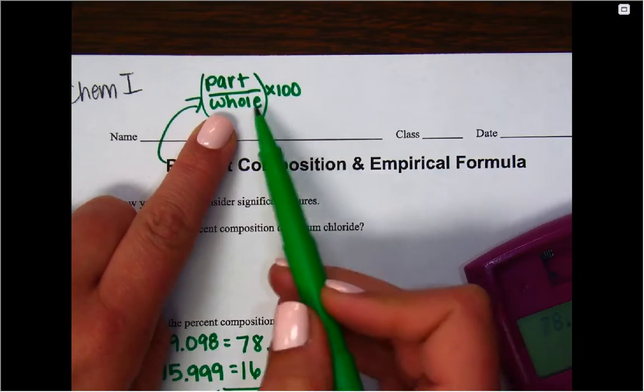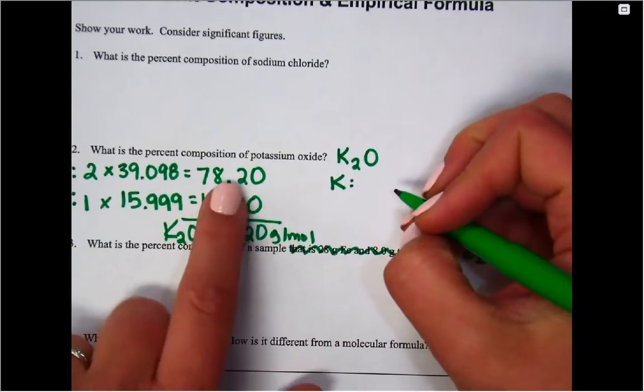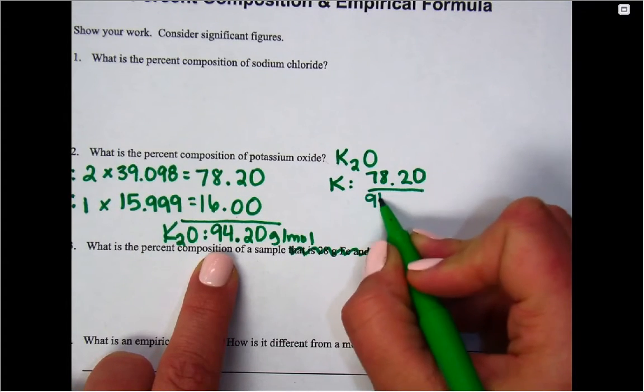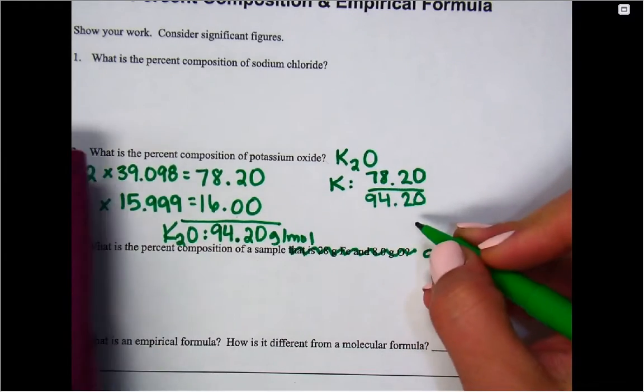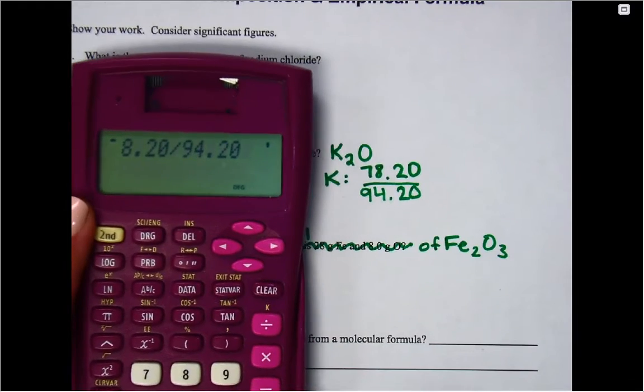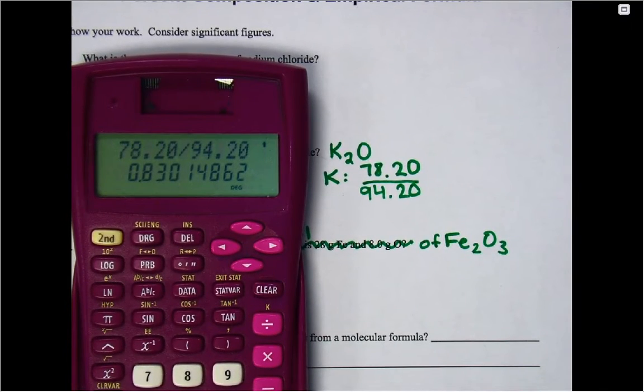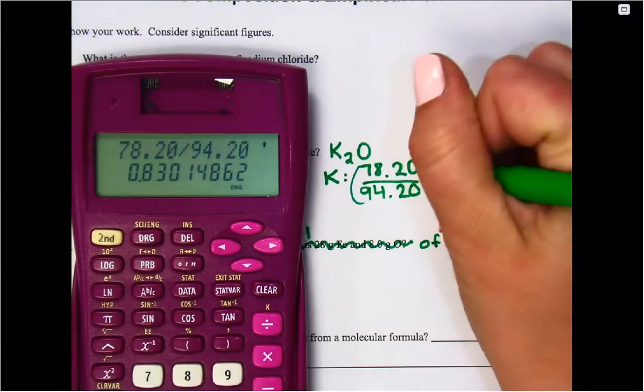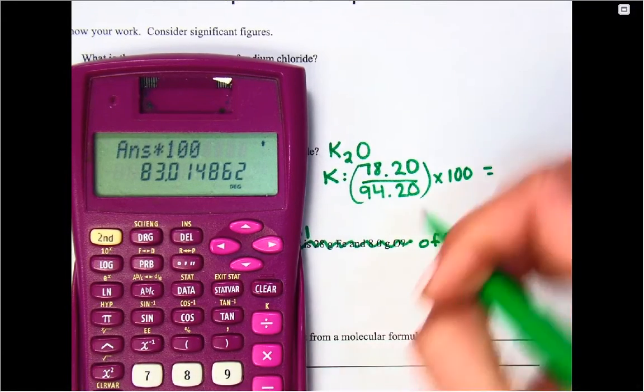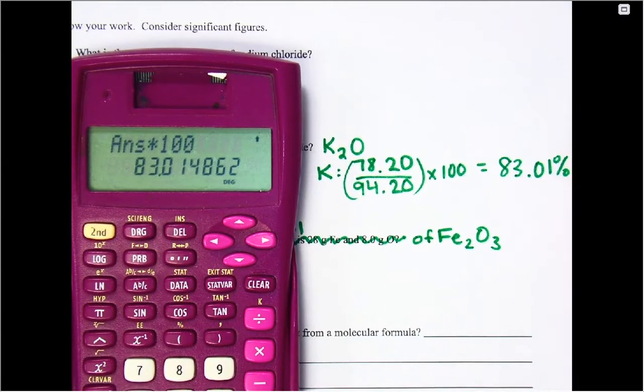We're trying to do this thing up here: part over whole times 100. So now we're going to start doing the percentages. So for potassium, we're going to have our part, which is 78.20. We're going to divide it by that total molar mass, 94.20. We're going to type that in. And then we're going to have this decimal show up. So 0.83. Our last step is to turn it into a percent, which means we're going to multiply it by what number? A hundred. So multiply it by 100. The shortcut to that is move that decimal two to the right. So we had 83.01 percent. So that's our percent of potassium.